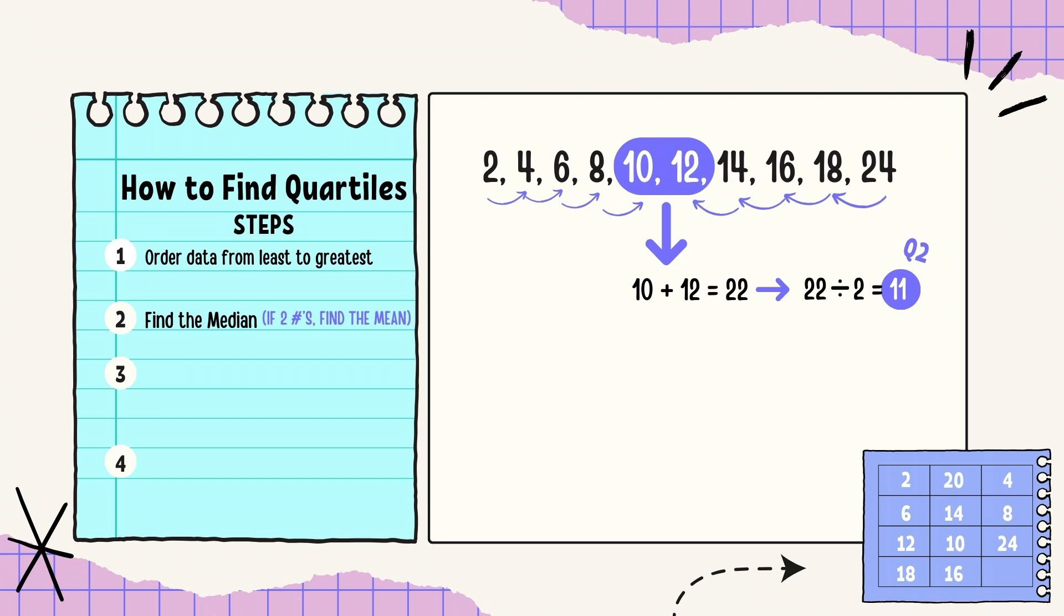Step 2, you're going to find the median. Since there are two numbers here, 10 and 12, we're going to find the mean. Basically, I'm going to add those two numbers up, and then divide them by 2, since there's two numbers. So 10 plus 12 is 22. Then I'm taking 22 divided by 2, which equals 11.